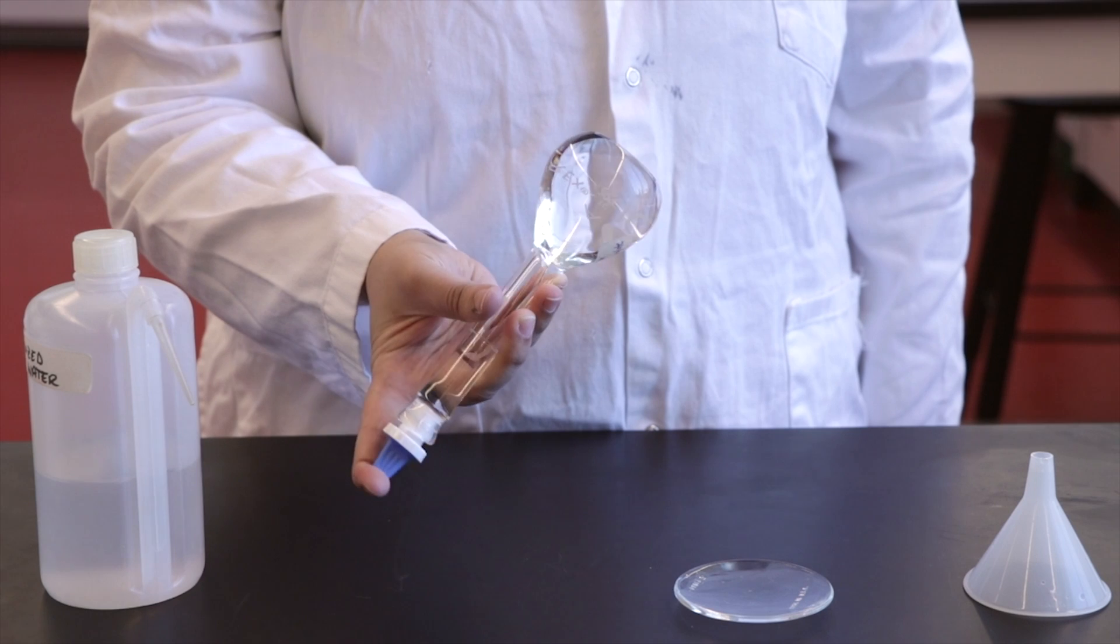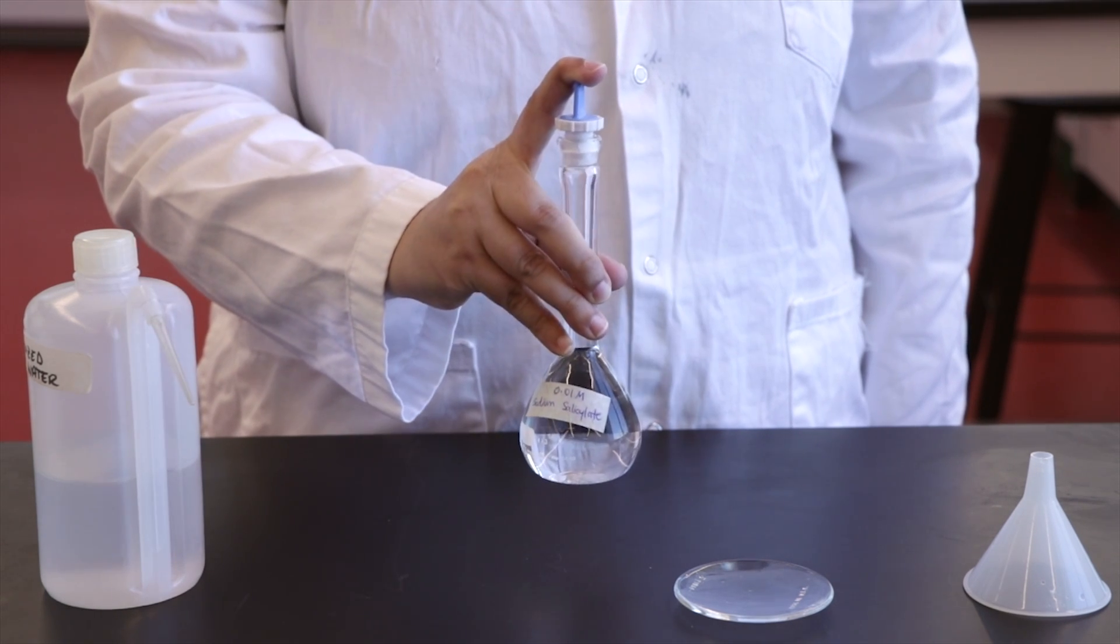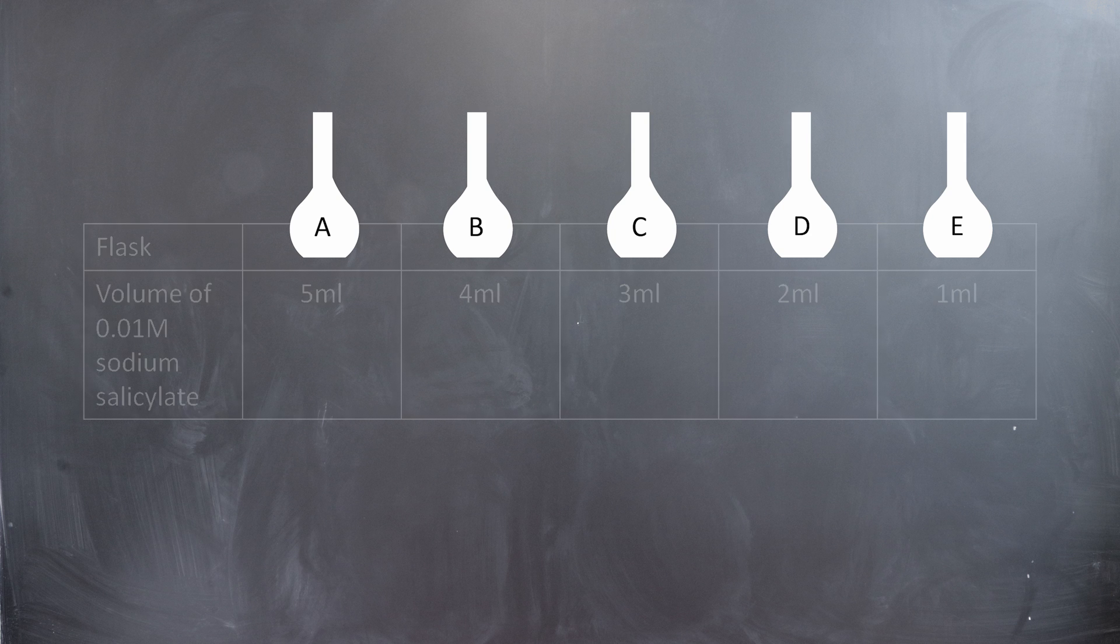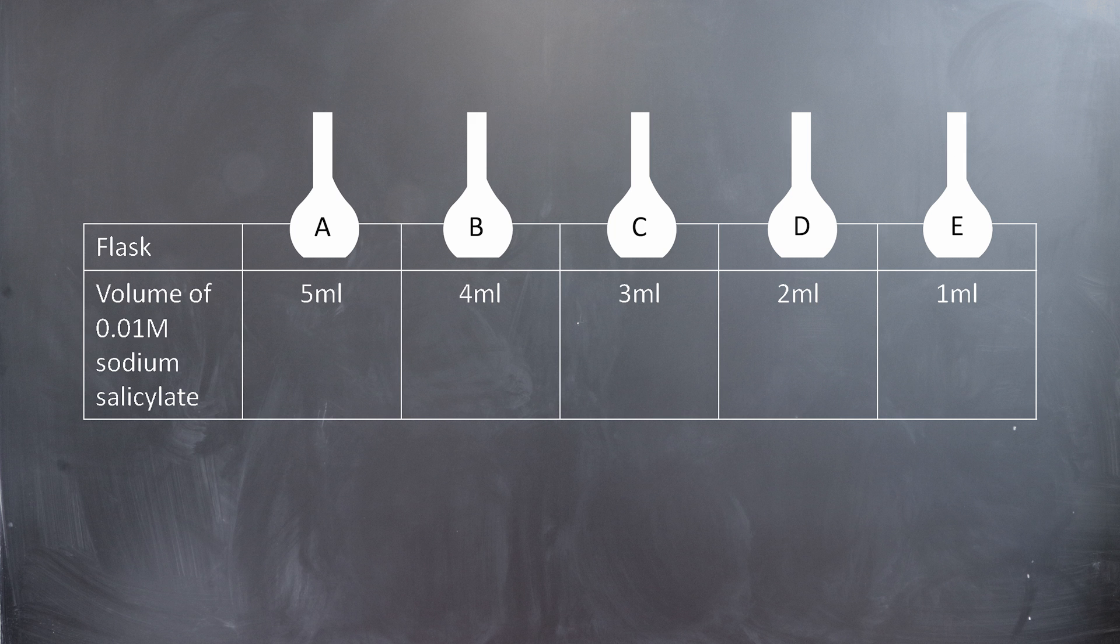You will be using the stock solution to prepare the five standard solutions. Next, use a mohr pipette to transfer the appropriate volume of stock solution into each 100 mil volumetric flask, as indicated in your lab manual.